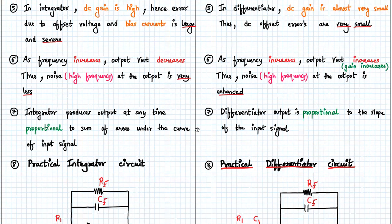A unique point about the integrator is that it produces an output at any time proportional to the sum of areas under the curve of the input signal — which is what integration means mathematically. Whereas the differentiator output is proportional to the slope of the input signal, and that is how differentiation works.